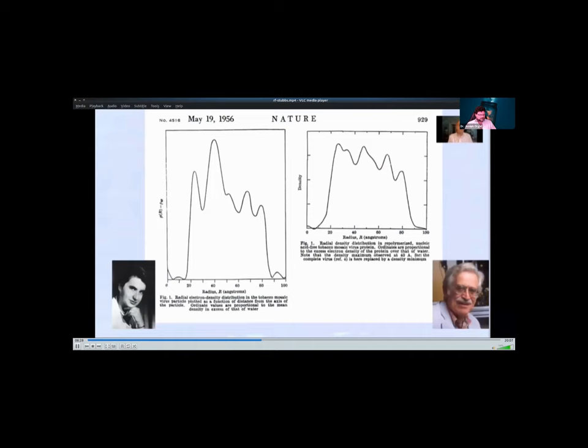A major contribution that Rosalind made to TMV structural studies was to realize that the method of isomorphous replacement, suitably modified, could be used to determine phases in fibre diffraction. Green, Ingram and Perutz had applied isomorphous replacement to protein crystallography in 1954, and of course, this eventually led to the first protein structures and dominated protein crystallography for decades. Rosalind used a mercury derivative to determine the phases of the TMV equator. And at the same time, Don Casper was using a lead derivative of a helical form of the TMV coat protein. The coat protein structure is isomorphous with the virus. So it is essentially the virus without the RNA.